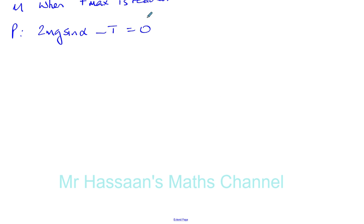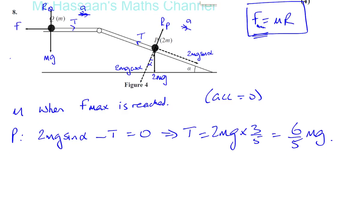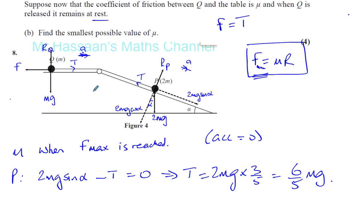So we can work out what T is from that. We can say that T is equal to 2 times mg times sine alpha, which was 3 fifths. So that gives you 6 over 5 mg. That's the tension. We need to find the value of mu. So we know that the tension here is 6 over 5 mg in this new situation.